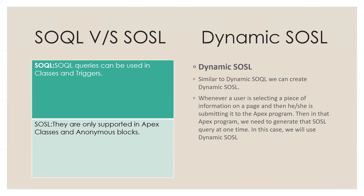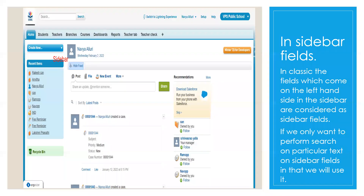This is dynamic Sokol. Dynamic Sokol is similar to dynamic Soso. We can create dynamic Sokol whenever a user is selecting a piece of information on a page and submitting it to an Apex program — in that Apex program, we need to generate the Sokol query at runtime, so we use dynamic Sokol. Sidebar fields are fields which appear on the left-hand side in the classic sidebar. If you only want to perform a search on particular text in sidebar fields, you use it — it is used in Soso.